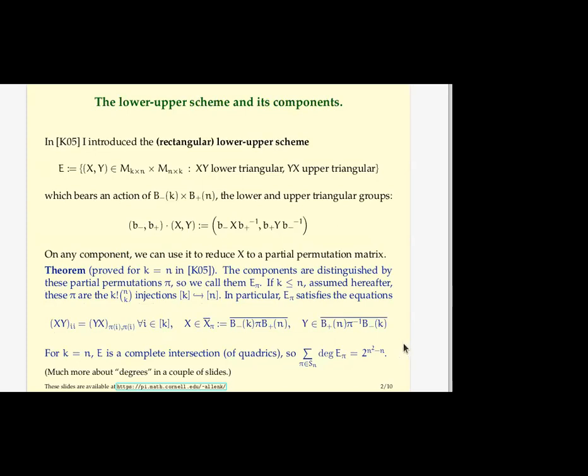And I got this thing that I introduced in this paper, some schemes related to the commuting scheme, that I called the lower upper scheme. And I mean, in that paper, I changed pretty quickly to the upper upper scheme, which I thought was more convenient. But actually, these days, I like the lower upper scheme more. It's not an interesting difference, just a linear change of variable.